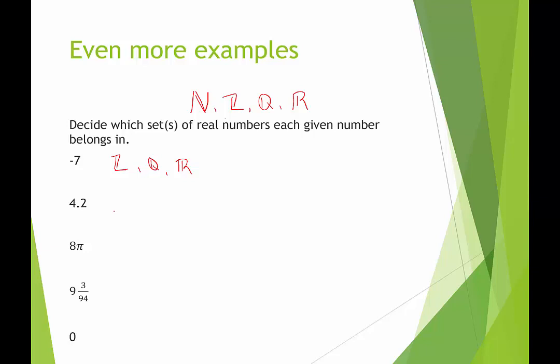4.2 is not natural, it's not an integer, it's rational and it's real. 8 pi is not a natural number, it's not an integer, it's not rational, but it is a real number. 9 and 3/94ths is not a natural number, it's not an integer, it is rational though, and of course it's a real number. 0 is not natural, it is an integer, it is a whole number, it is a rational number, and it is a real number. So these are the very famous subsets of real numbers.